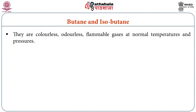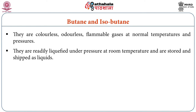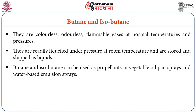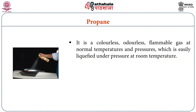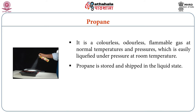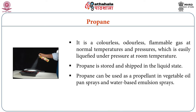The next propellants are butane and isobutane. Both are colorless, odorless, flammable gases at normal temperature and pressure. They are readily liquefied under pressure at room temperature. Propane is also a colorless, odorless, flammable gas at normal temperature and pressure, which is easily liquefied under pressure at room temperature and stored in liquid state. Propane can be used as a propellant in vegetable oil pan sprays and water-based emulsion sprays.